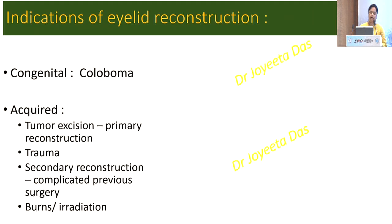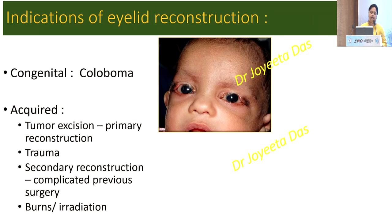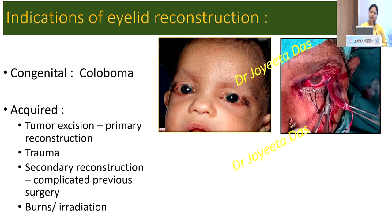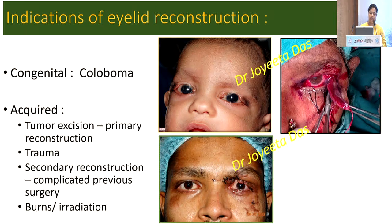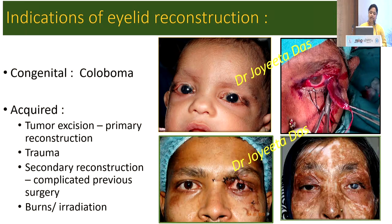The indications of eyelid reconstruction are congenital — coloboma is the most common — and among the acquired causes: primary reconstruction after tumour surgery, trauma, and secondary reconstruction after complicated previous surgery, burns, and radiation.